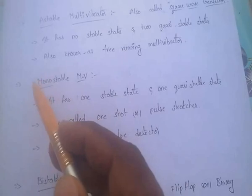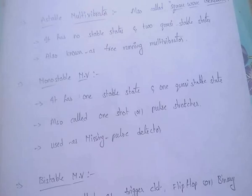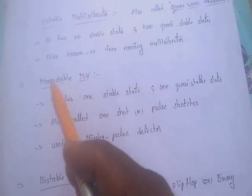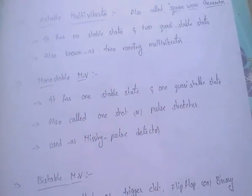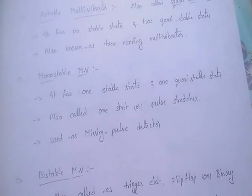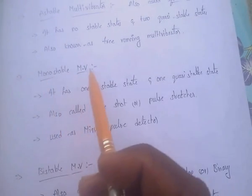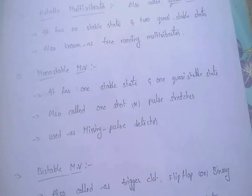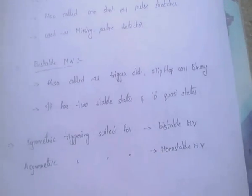Monostable multivibrator: 'mono' means one, so it has one stable state and one quasi-stable state. It is also called a one-shot or pulse stretcher, and it is used as a missing pulse detector.